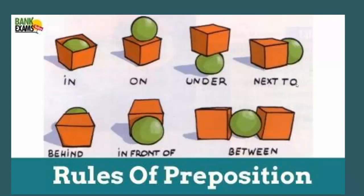The next one is 'next to.' Next to means that you have two things together — the box and the ball are side by side. The ball is next to the box. Then 'behind' — behind means back. The ball is behind the box. The next one is 'in front of.' The ball is in front of the box. The last one is 'between' — there are two boxes and one ball, and the ball is between the boxes.